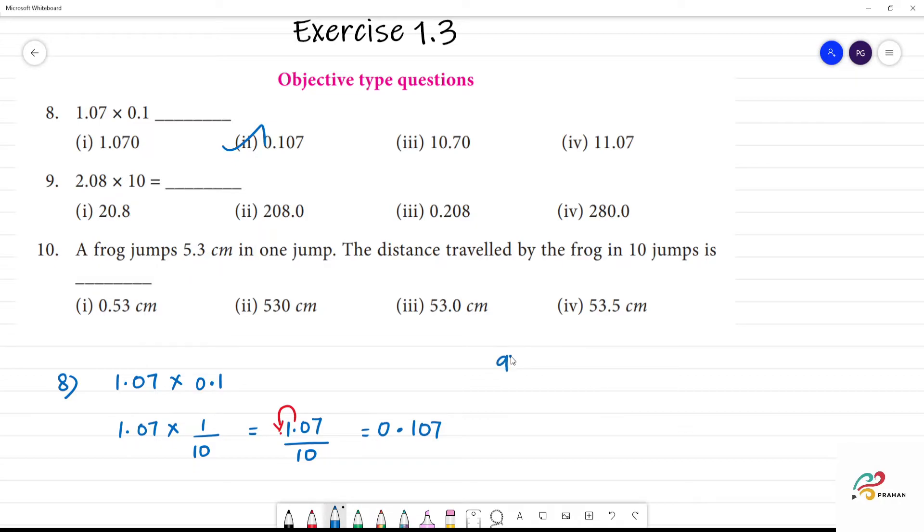Next, ninth one. This is 2.08 into 10. So 10 is where there is a zero. Point is where you jump. Multiplication means you jump.